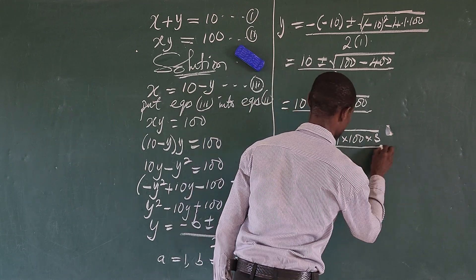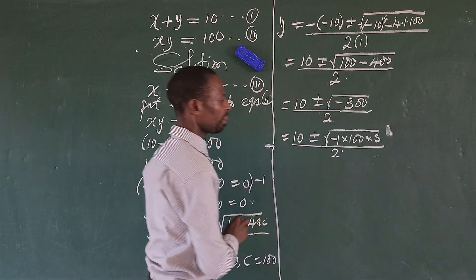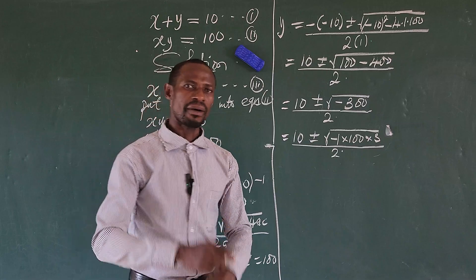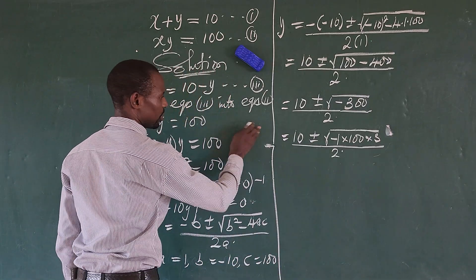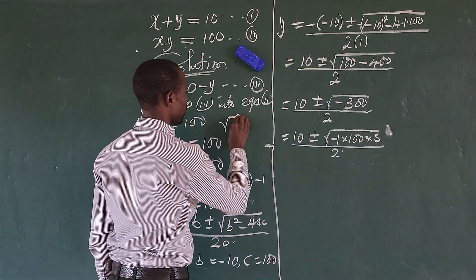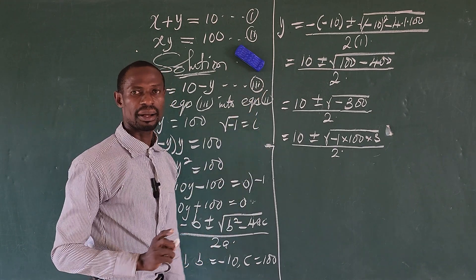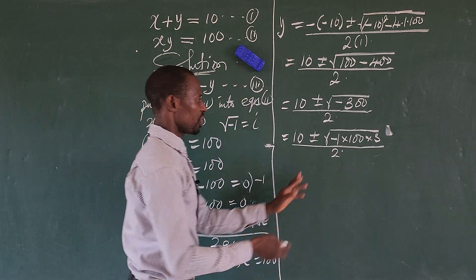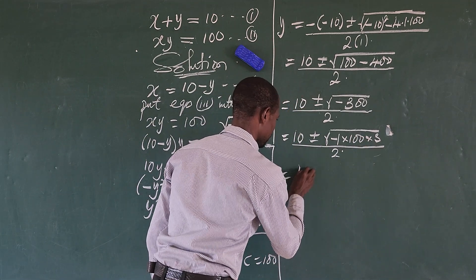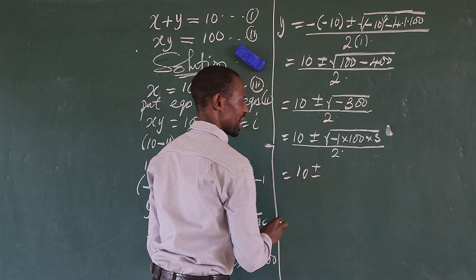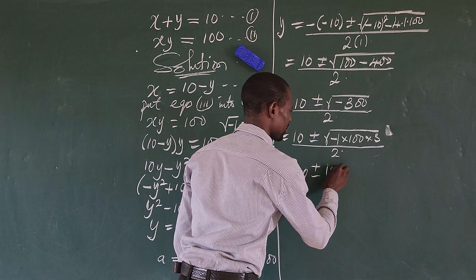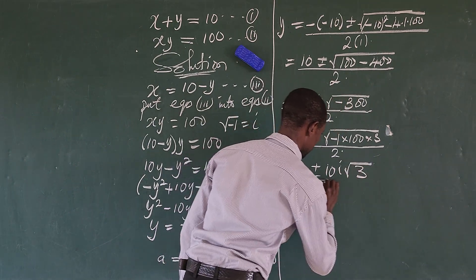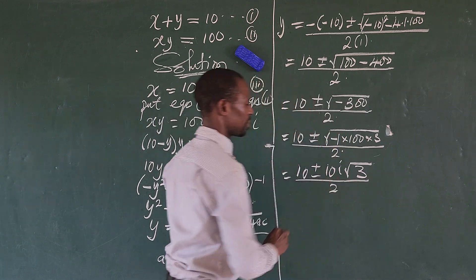We have the square root of minus 1 here. From the world of imaginary numbers, we know that the square root of minus 1 equals iota, and the square root of 100 is 10. So we can rewrite this as 10 plus or minus 10 iota times the square root of 3, all over 2.